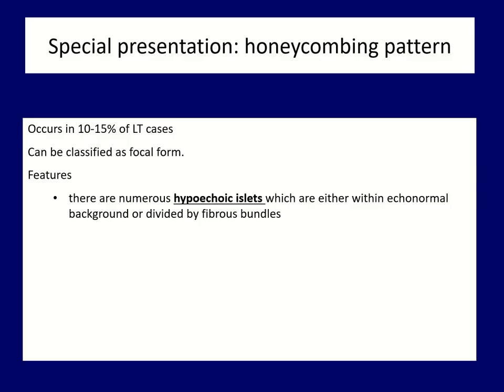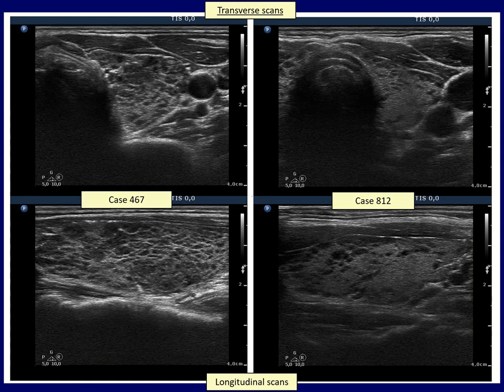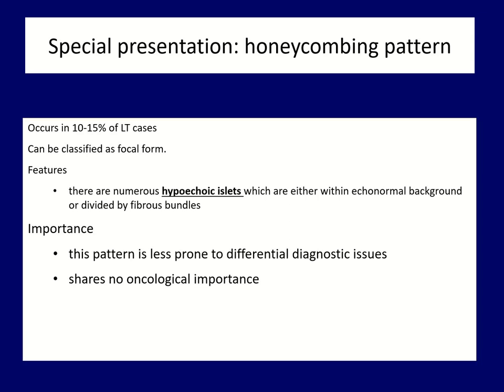The first of the three special forms is the honeycombing presentation. This is characterized by numerous hypoechoic islets separated either by connective tissue or echonormal thyroid from each other. The left case is pathognomonic. Although in the right case, a cystically degenerated thyroid lobe seems a condition to consider, thorough analysis reveals that these are deeply hypoechoic and not cystic areas. The honeycombing form has no difficulty in recognizing or separating from a nodule, and there is no concern about malignancy.